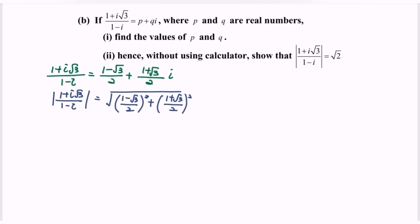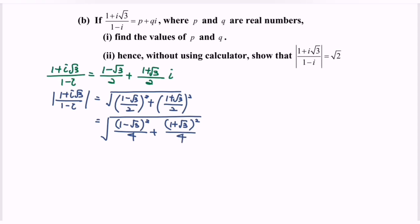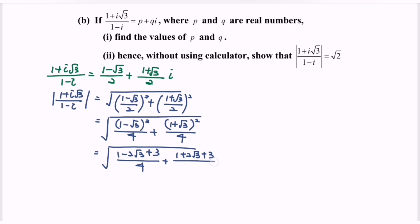Next, we expand the expression. For the first term, we have (1 - √3)² / 4, and for the second term, (1 + √3)² / 4. Expanding gives the square root of [(1 - 2√3 + 3)/4 + (1 + 2√3 + 3)/4].